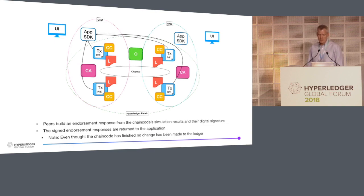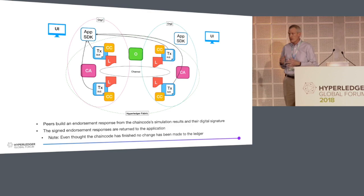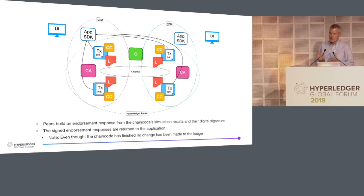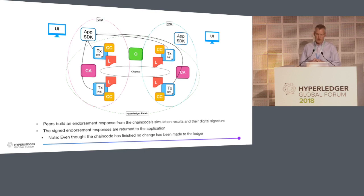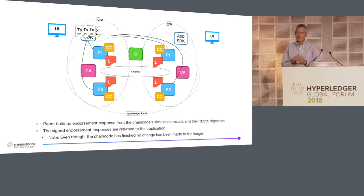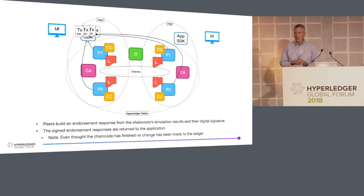The chaincode returns results back to the peers. The peers will endorse that transaction — validate the response and apply a digital signature to the results from the chaincode. That endorsement gets sent back to the application. At this point, even though the chaincode is done doing its piece of this whole process, no change has actually been made to the ledger at all. In fact, if the application just dropped it at this point, the ledger would not be modified at all.